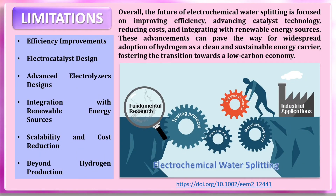Here are some potential developments and trends that could shape the future of electrochemical water splitting. Researchers are continually working on developing more efficient catalysts and electrode materials. Novel catalyst designs such as nanostructured materials and composite catalysts are being explored to enhance catalytic activity and reduce energy loss. The development of cost-effective and earth-abundant catalysts is a major research focus — transition metal-based, non-precious metal-based, and molecular catalysts are being investigated as alternatives to expensive noble catalysts like platinum. Electrolyzer designs are also being optimized, with advances in cell architectures such as flow-through designs and micro-reactors.